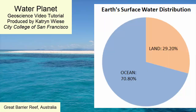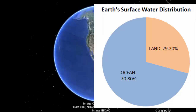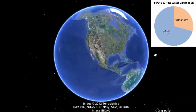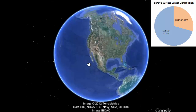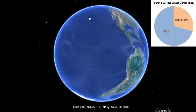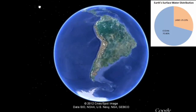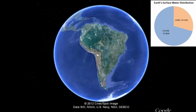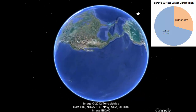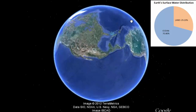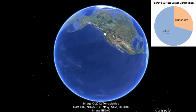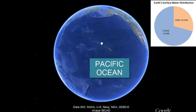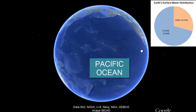Earth is a water planet. Over 70% of the surface is covered with water in a series of interconnected basins creating one world ocean. This rotatable sphere shows how this world ocean is distributed across the globe. The largest basin within the world ocean, representing 50% of it, is the Pacific Ocean, which sits between Asia, Australia, and the Americas.